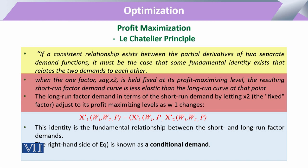We are going to include this principle in equation form. If a constraint exists on a relationship such that the partial derivatives of those separate demand functions relate to each other in some way, then a fundamental identity prevails between them. Considering this, when we come to our output setup, we say that a factor of production — say x2 — if we consider it fixed for profit maximization, then we need to see how the output or profit of that firm will change and how the resulting short-run factor demand will change.